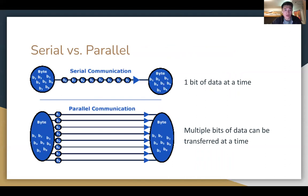Moving on to the properties of a communication protocol — these are what to keep in mind when thinking about different protocols. First is serial versus parallel. Serial is when a system can only communicate one bit of data at a time, while parallel can communicate multiple. With one wire, you can only transfer one bit at a time because you can't send a one and a zero simultaneously on the same wire. With eight channels in parallel, each one can hold a different bit value, so it sends eight values at a time.